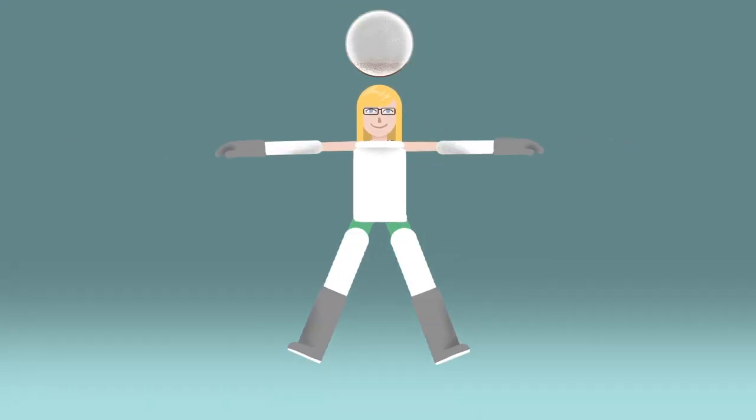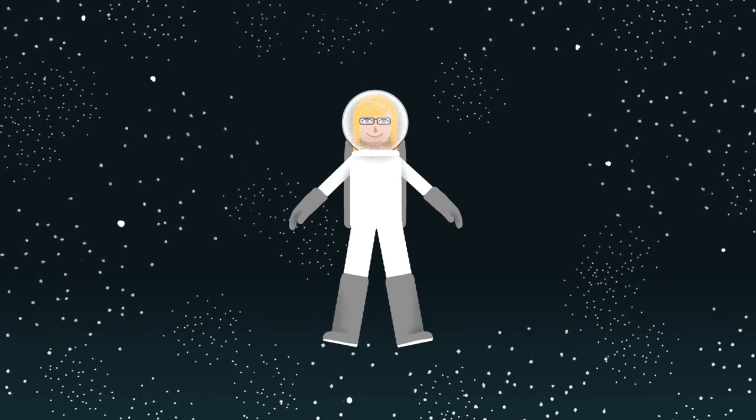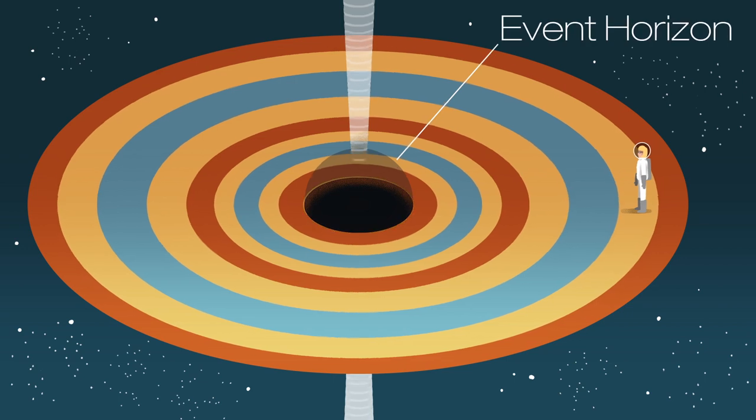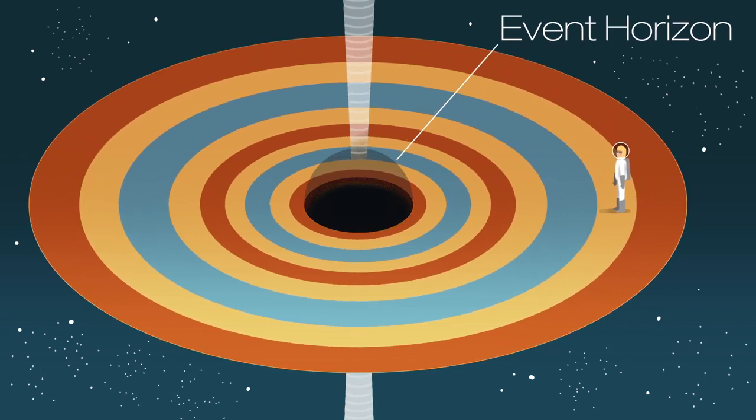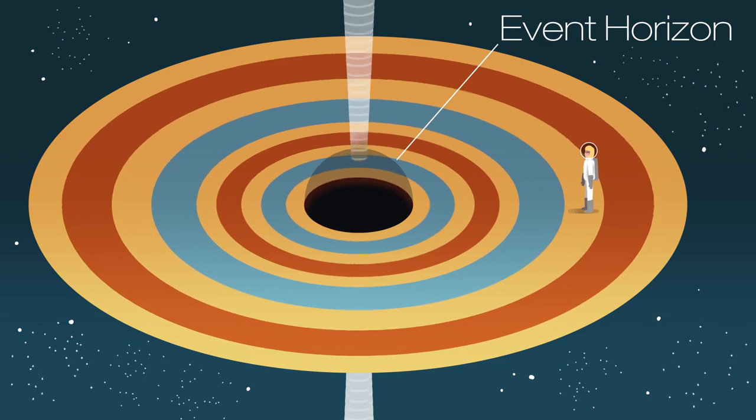So what would happen to Liz if she approached a black hole? Well, near the boundary, called the event horizon, she would feel the effects of the strong gravitational forces from this collapsed star.